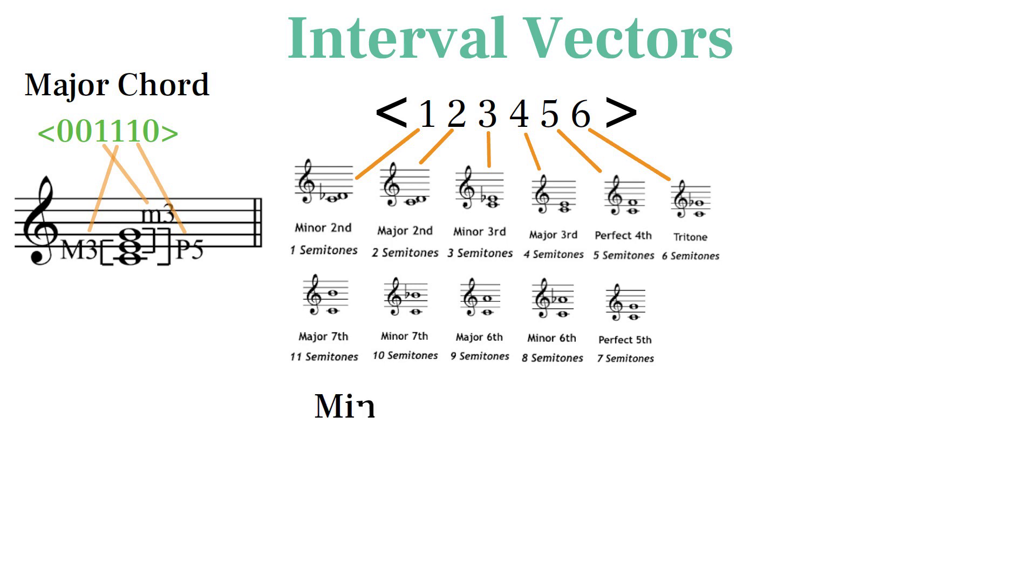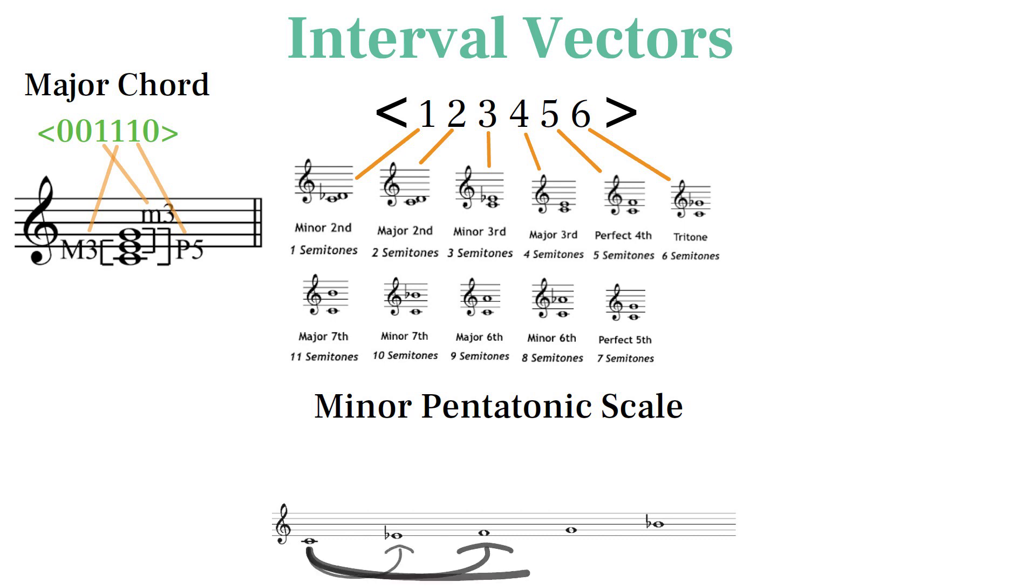To calculate the interval vector for the minor pentatonic scale, we start by comparing the starting pitch with all the other pitches, giving us a minor third, fourth, another fourth, fifth, and a whole step.